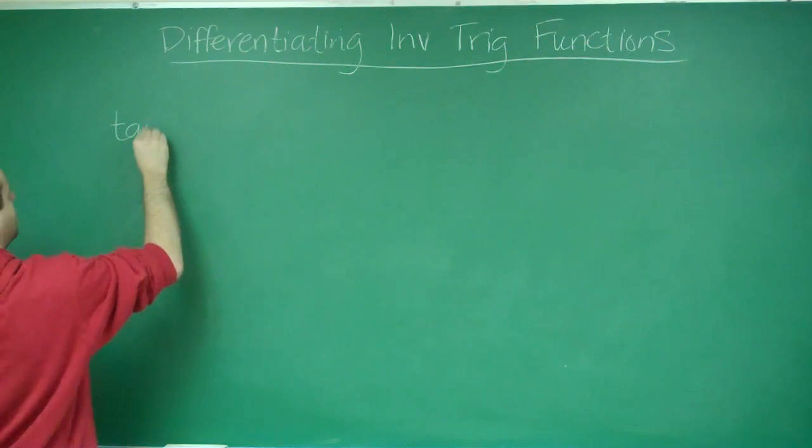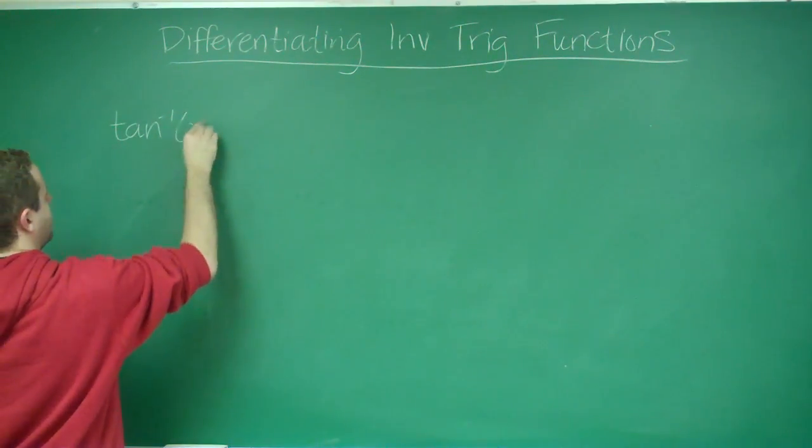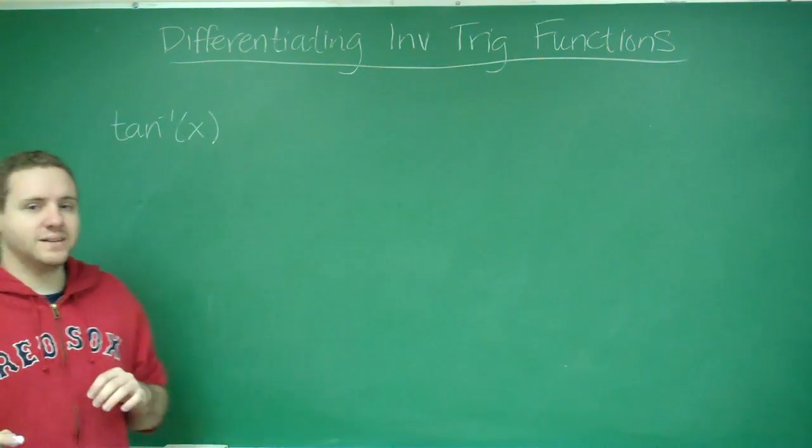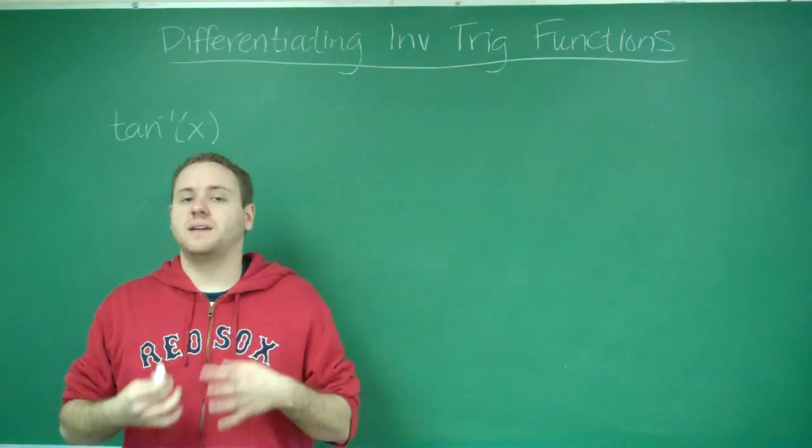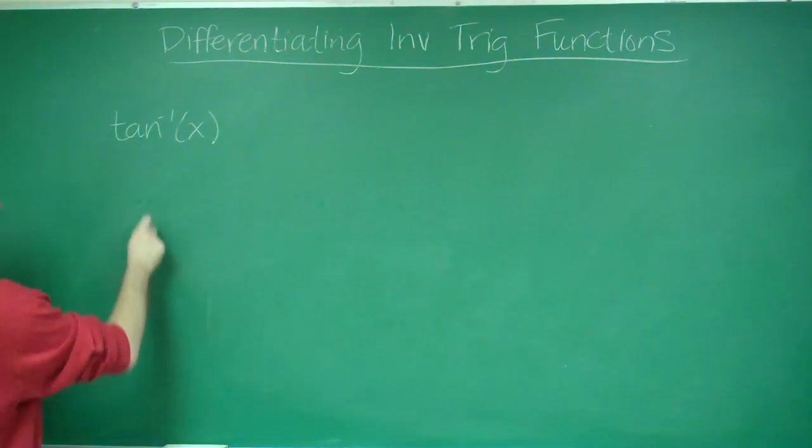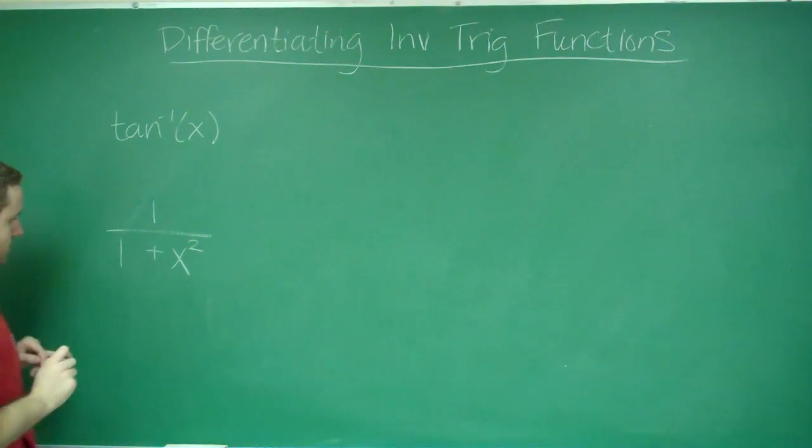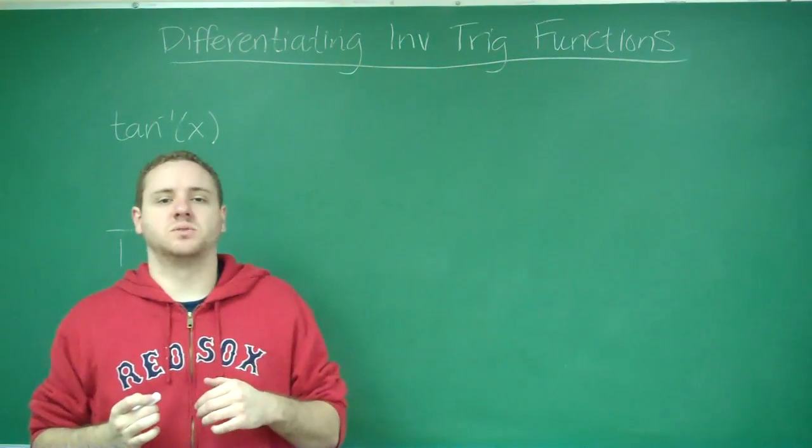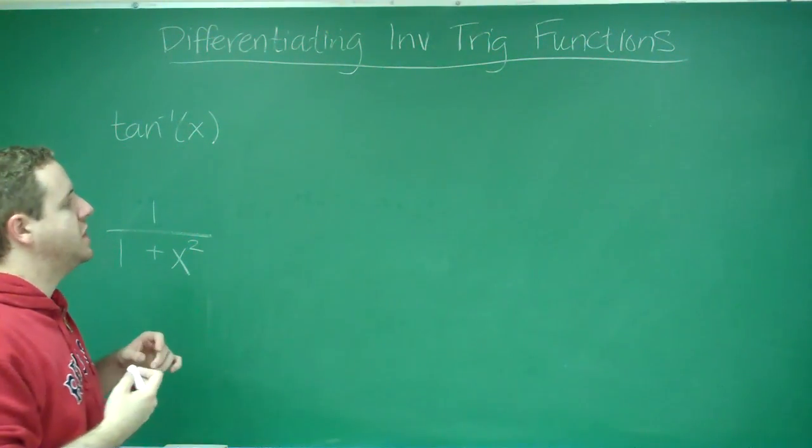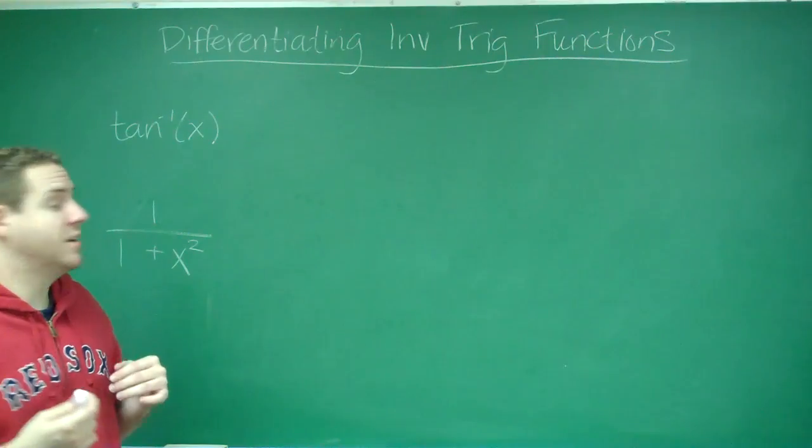So if you have the function arc tangent of x, the derivative of that is something you're just going to want to memorize: 1 over 1 plus x squared.